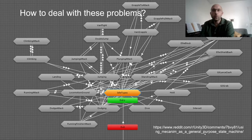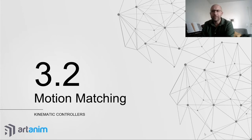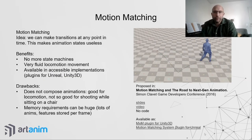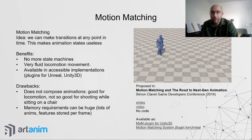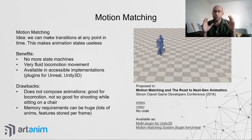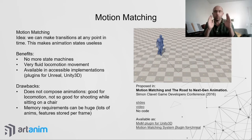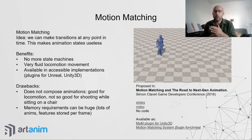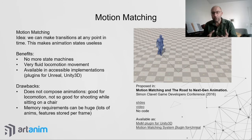To address this challenge, a technique called motion matching was proposed around 2016 by people at Ubisoft. The basic idea is that instead of small animation loops, you create an entire database of motion and pre-process it by analyzing the distance from every pose in every frame of every animation to any other pose — meaning you can transition between any two animations at any moment.